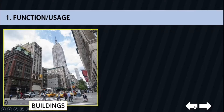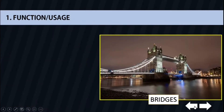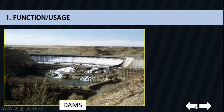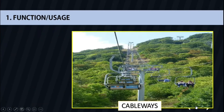Second is bridges. Bridges are structures carrying a pathway or roadway over a depression or obstacle. The third one is dams, which is considered a barrier preventing the flow of water or of loose solid materials. The fourth one are cableways, which are a suspended cable used as a track along which carriers can be pulled.